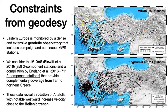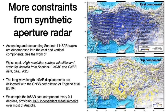This data reveals rotation of Anatolia and westward increase in interseismic velocities towards the Hellenic Trench. We also include constraints from synthetic aperture radar from the work of Jonathan Weiss and co-authors, which includes ascending and descending Sentinel-1 InSAR line-of-sight velocities decomposed into east and up components, then combined with the GNSS velocity field to build a three-component velocity field across Anatolia.